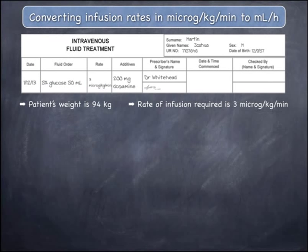The order displayed shows that a patient is ordered dopamine, 200 milligrams in 50 mils of 5% glucose, to infuse at 3 micrograms per kilogram per minute. The case notes, which are not displayed on the screen, tell you that the patient's weight is 94 kilograms.